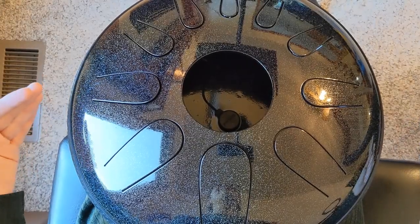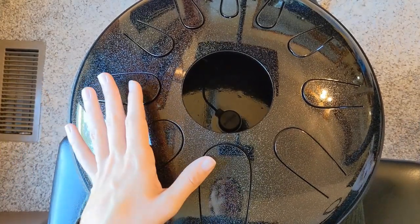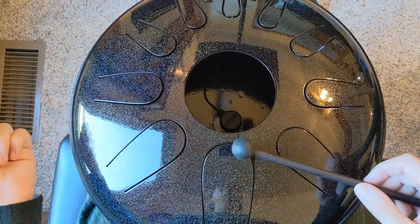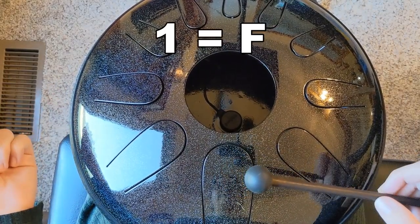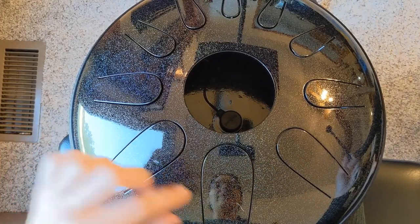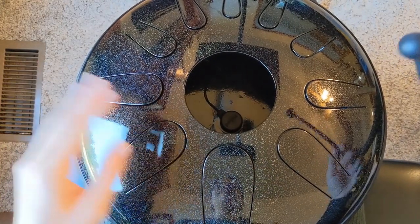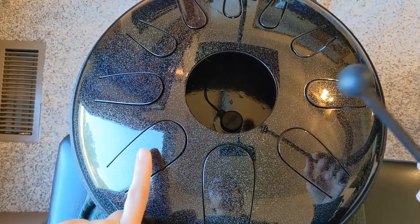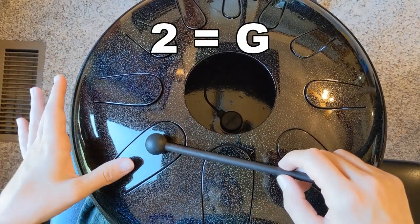Okay, so we are gonna start here on the Dominus. And as I said earlier, we're gonna start with tongue one on the note F. And then on tongue number two, this is actually gonna be the first degree of our scale. We're gonna tune this to G.